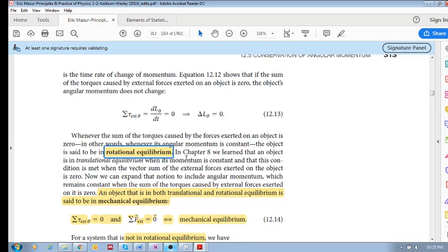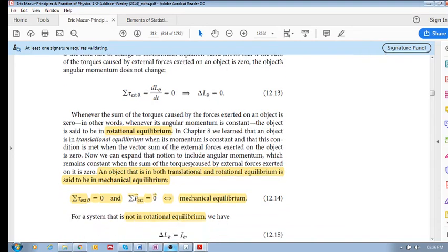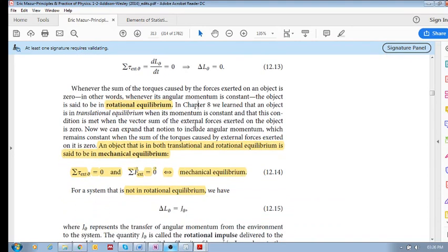And so this situation we have here is called rotational equilibrium. We also know about translational equilibrium. We've looked at that in Chapter 8. So now an object that is in both translational equilibrium, sum of the forces is zero, and sum of the external torques is zero, is said to be in mechanical equilibrium.